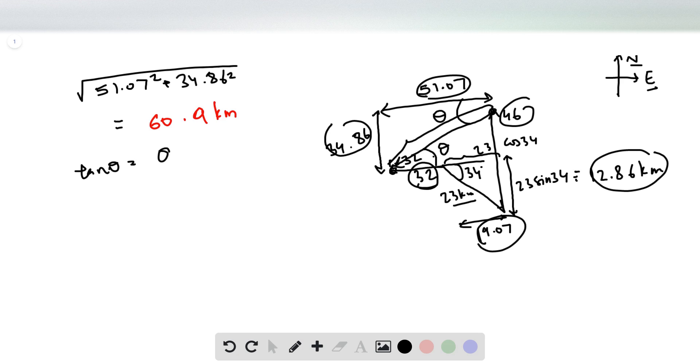Which is 34.86 divided by 51.07. Hence theta equals tan inverse of 34.86 divided by 51.07. By plugging this into a calculator, we can see that this is 34.32 degrees.